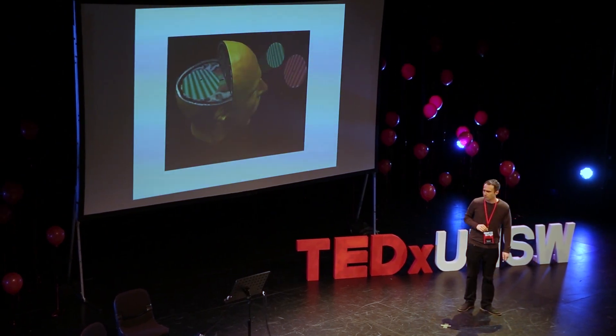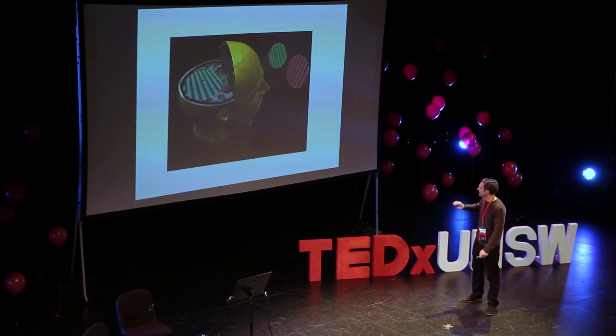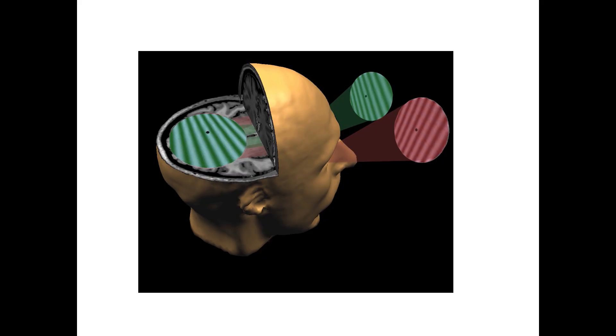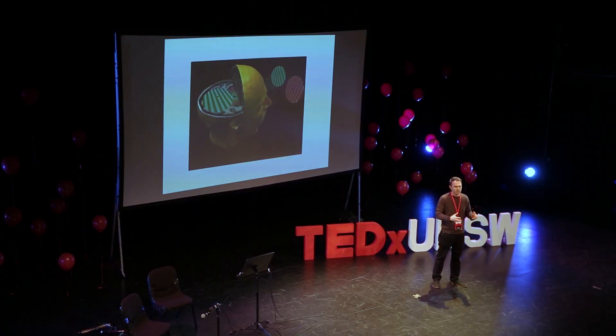It's called binocular rivalry. We say this a lot in the lab. Let me just explain it a little bit. The way it works, we have two different color patterns, the red one and the green one. And we can set it up with mirrors and things in the lab. So, one eye sees the red and the other eye sees the green. And we set that up so that we see them in the same place at the same time, which can't actually happen in the real world, two different objects.